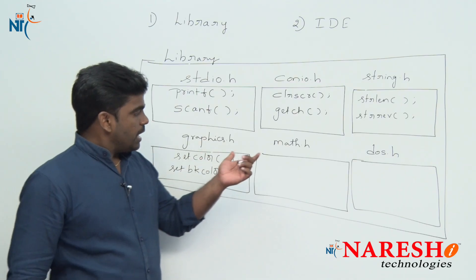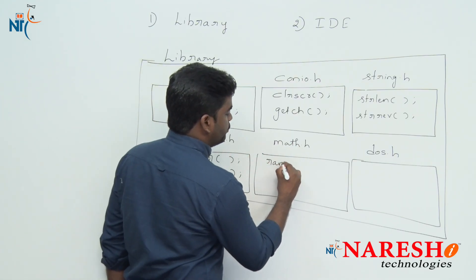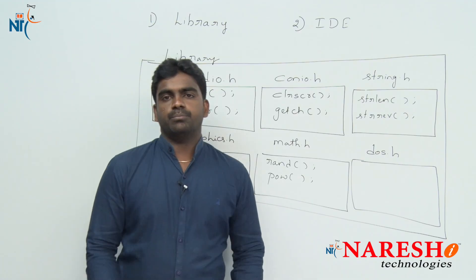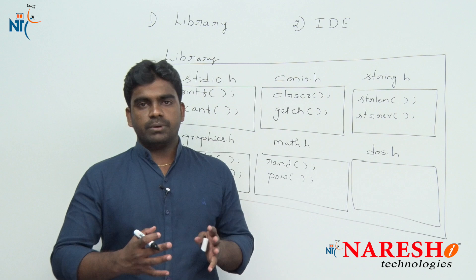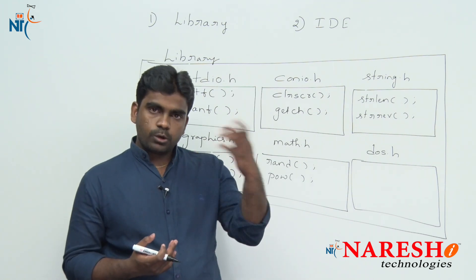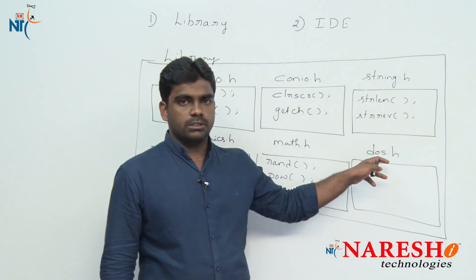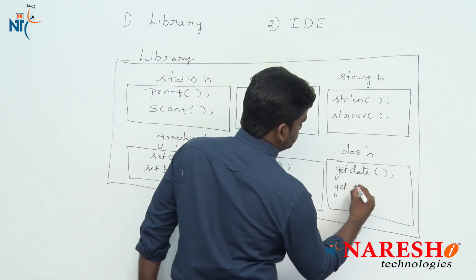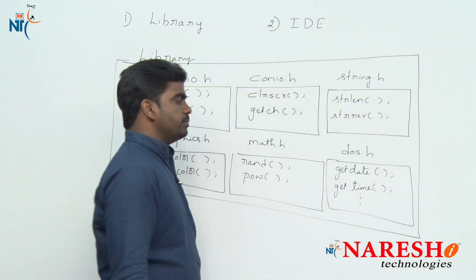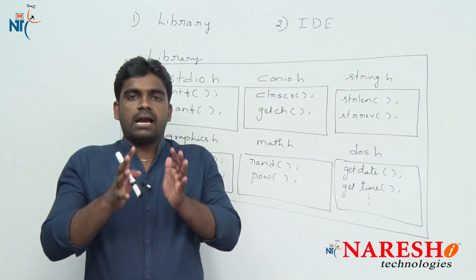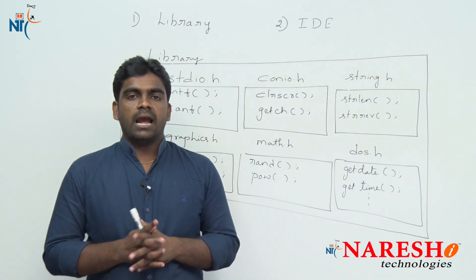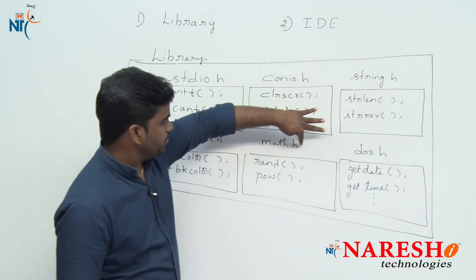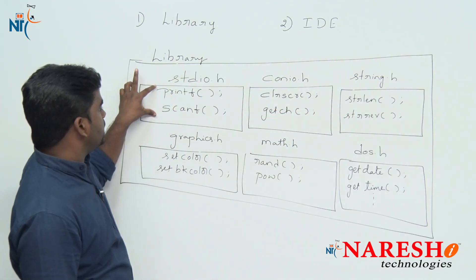In math.h, a random number generation function is available. The power function lets you find the power of a particular number. dos.h relates to the disk operating system — if you want to access operating system related information from your C program, you use dos.h. Functions like get date and get time are available in dos.h. So, a header file is a collection of related predefined functions, and the C library is a collection of header files.